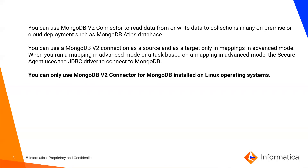You can use a MongoDB V2 connector to read or write data in any on-premise or cloud-deployed MongoDB Atlas databases. You can use these MongoDB V2 connections as a source and target only in an Advanced Mapping. When you use a mapping or task in Advanced Mode, the secure agent uses the JDBC driver to connect to MongoDB. You can only use a MongoDB V2 connector for MongoDB installed on a Linux operating system.